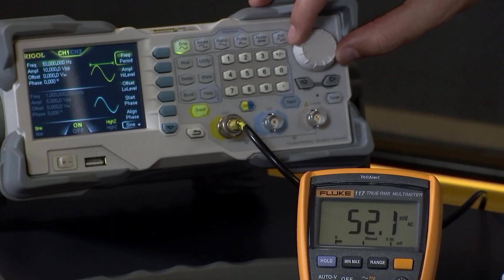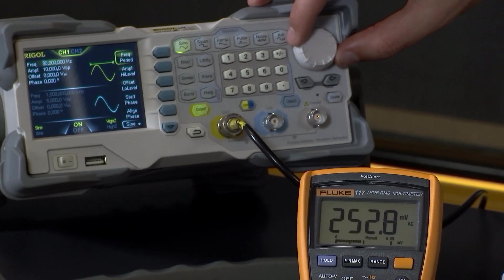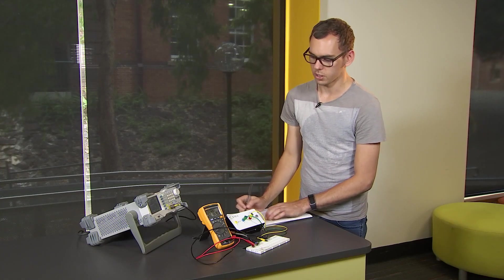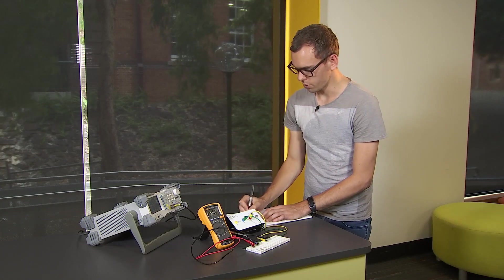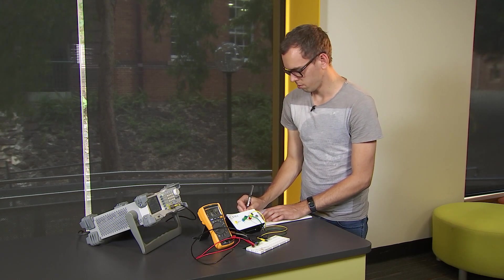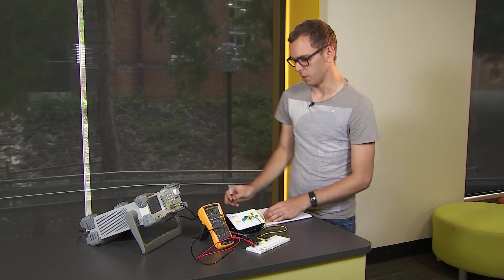Then I'm going to turn up the frequency by dialing this knob, and at 20 Hertz the voltage drop is 216.5 plus or minus 0.3 millivolts.